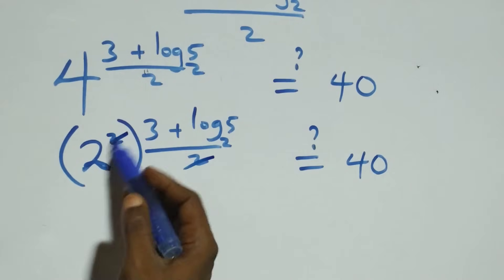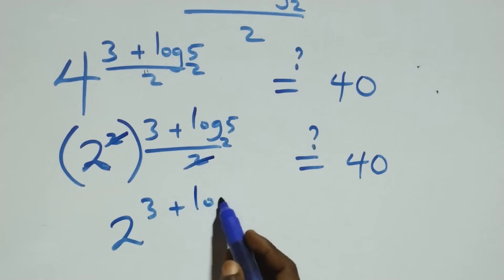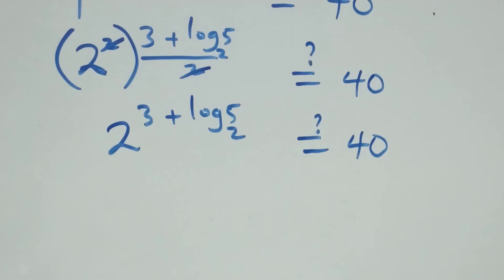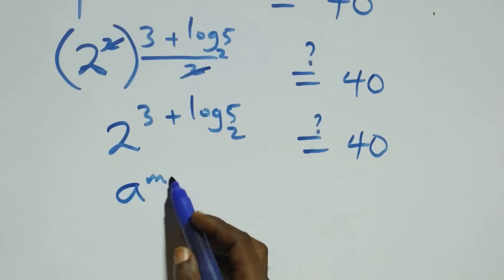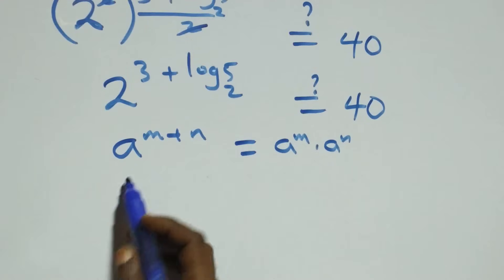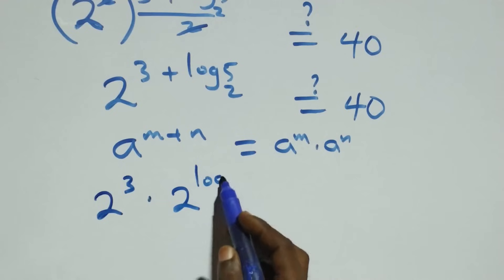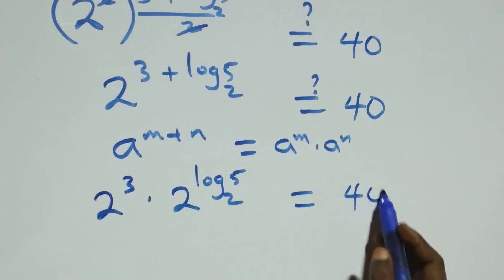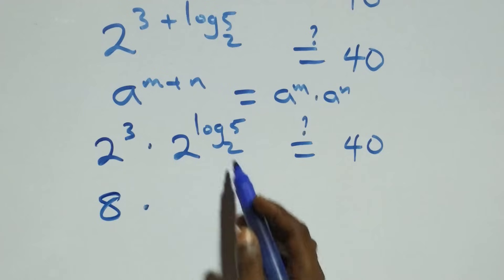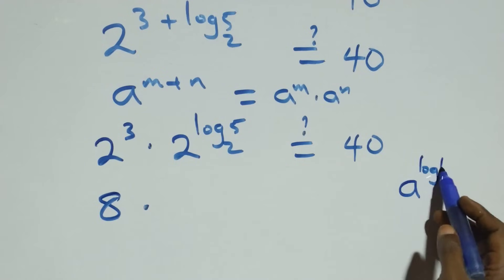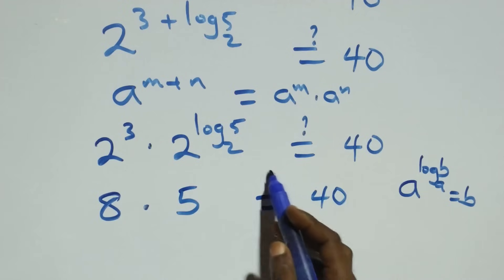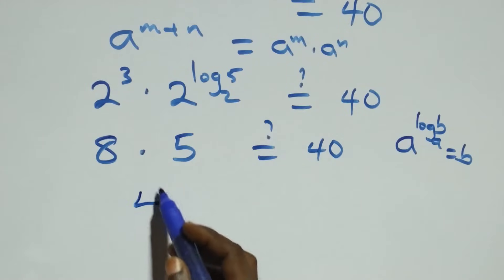The powers multiply and the 2s cancel, leaving 2 raised to the power 3 plus log 5 base 2 equals 40. We split this as 2 raised to power 3 times 2 raised to power log 5 base 2. Since 2 raised to power 3 is 8, and using the identity a raised to log b to base a equals b, we get 8 times 5 equals 40. The left hand side equals the right hand side.